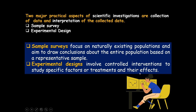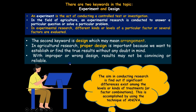Two important terms are involved in experimental design: experiment and design. An experiment is the act of conducting a controlled test or investigation — a trial under controlled conditions, or an operation performed under well-defined conditions. In agricultural and experimental research, an experiment is conducted to answer a particular question or solve a particular problem. Different kinds or levels of a particular factor, or several factors, are evaluated.